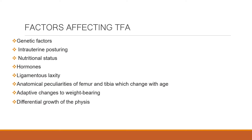Next we will discuss factors affecting the tibiofemoral angle. These include: genetic factors, intrauterine posturing of the child, nutritional status such as rickets, hormonal factors, ligamentous laxity, anatomical peculiarities of the femur and tibia which change with age, adaptive changes to weight bearing, and differential growth of the physis.